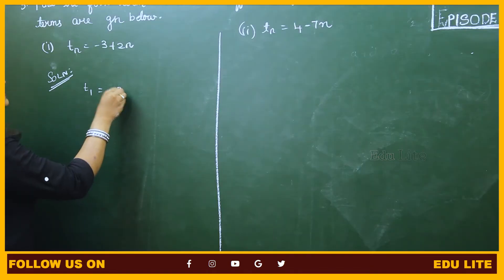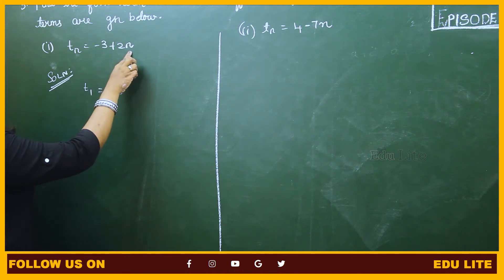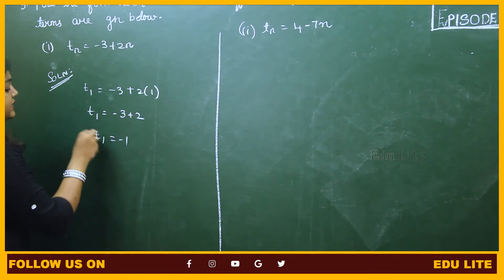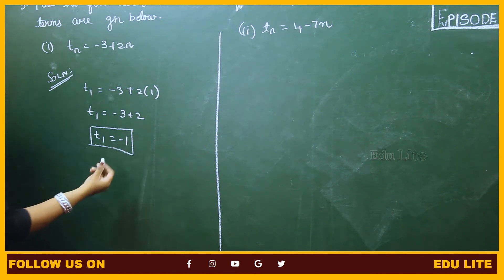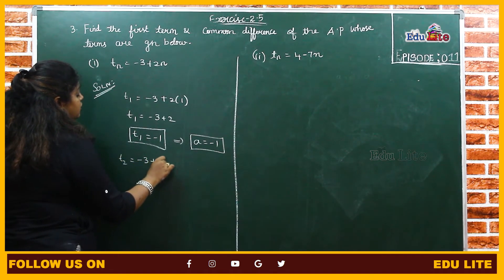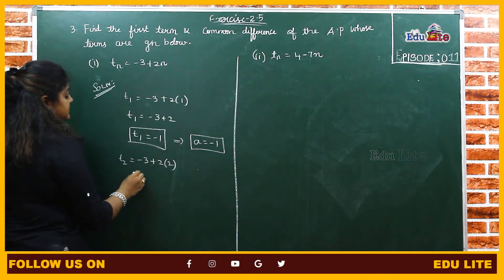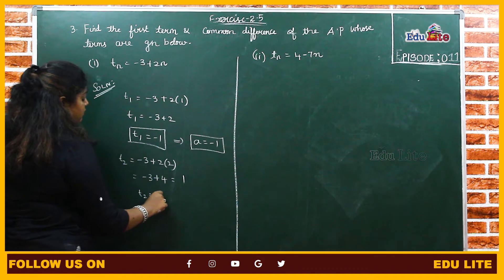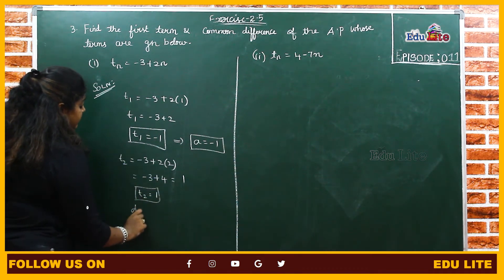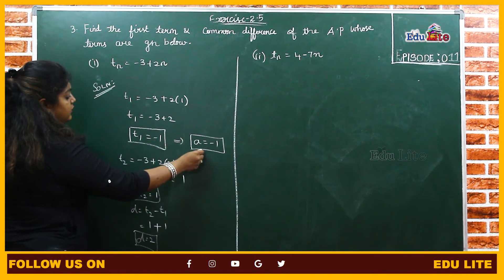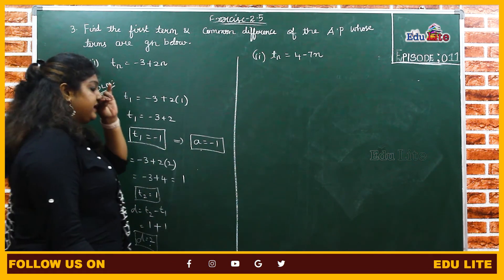For the first subdivision, T1 equals minus 3 into 1 plus 2 into 1, which is minus 3 plus 2 equals minus 1. So A equals minus 1. T2 equals minus 3 into 2 plus 2 into 2, which is minus 6 plus 4 equals 1. To find D: T2 minus T1 equals 1 minus (minus 1) equals 2. Therefore D equals 2.